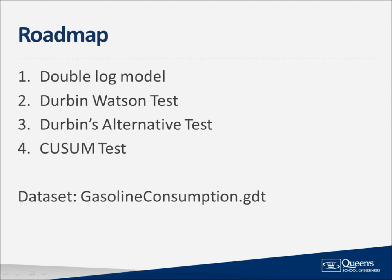We will be using a new dataset in this video. It is a dataset provided as a sample file in Gretl. The file is called Green7-8 and it contains gasoline price and consumption data. This file is used for several examples in William Green's textbook, Econometric Analysis. I have modified the original file so that all of the variables are in per capita and real dollar values. Now let's open Gretl and get started by discussing the dataset.